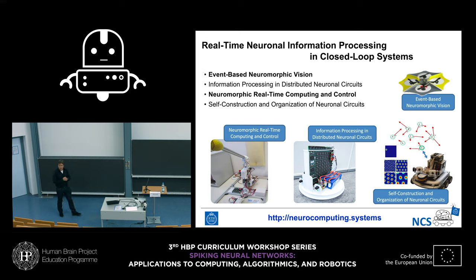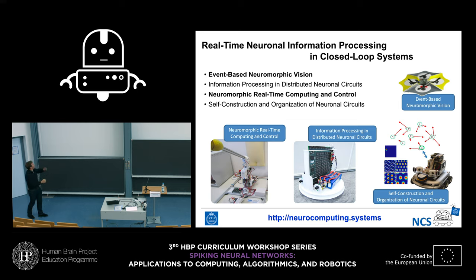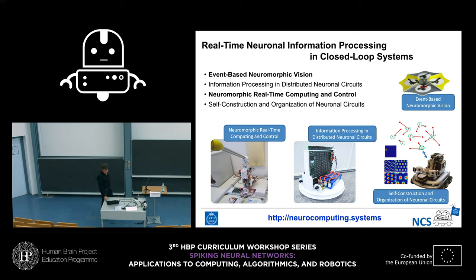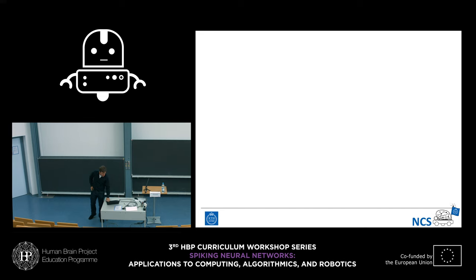We have a bunch of robots in our lab — much simpler than the amazing tools shown in previous slides. We have simple mobile arm robots, simple wheeled robots, and some flying robots. There are four main research directions in our lab, and today I will talk about event-based neuromorphic vision and neuromorphic real-time computing and control as two examples to highlight benefits of neural-inspired computing.